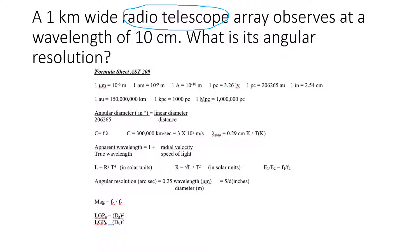Your other clue should be here that it's a 1 kilometer wide. And remember that the 5 over D, D has to be in inches. So this should give you a clue that perhaps we can't use that formula. So we're going to be using the full-blown resolution formula right here.